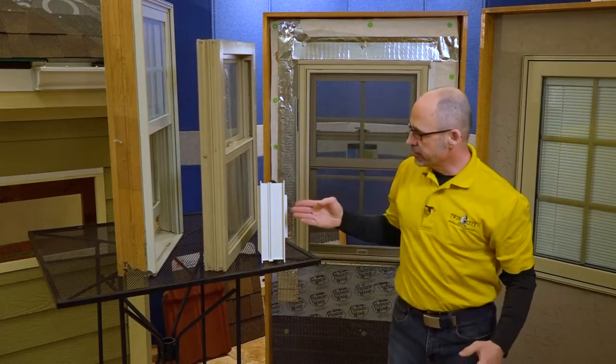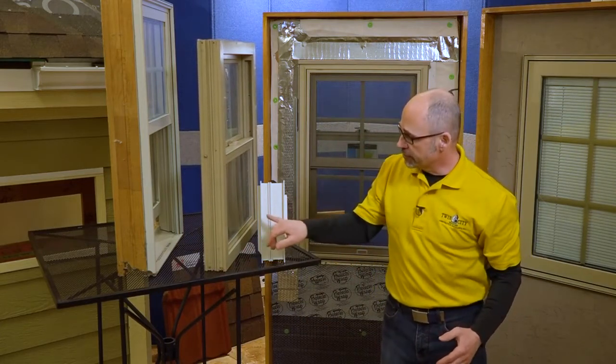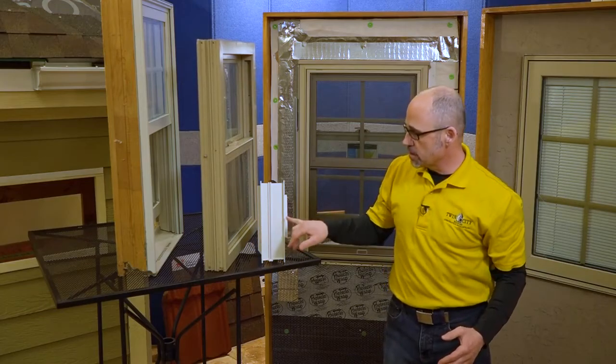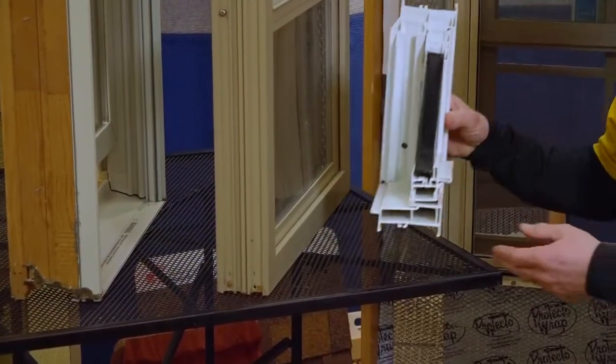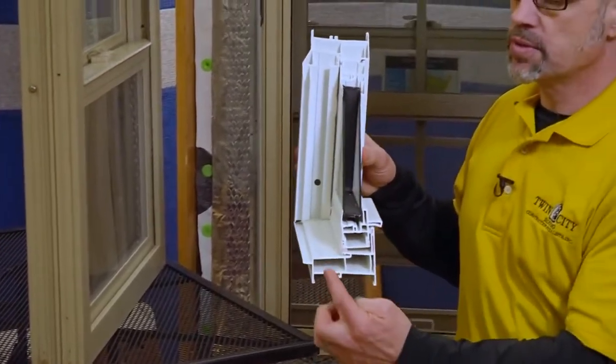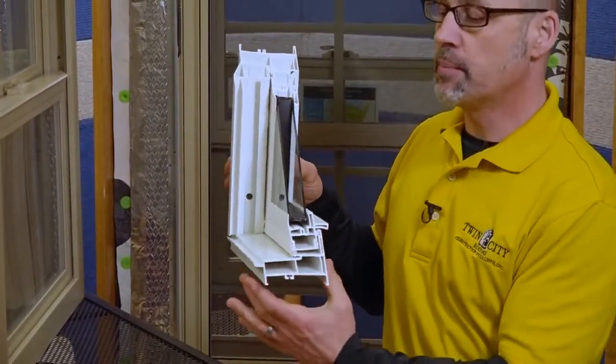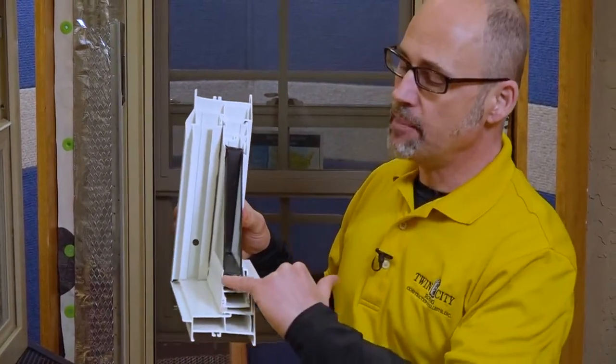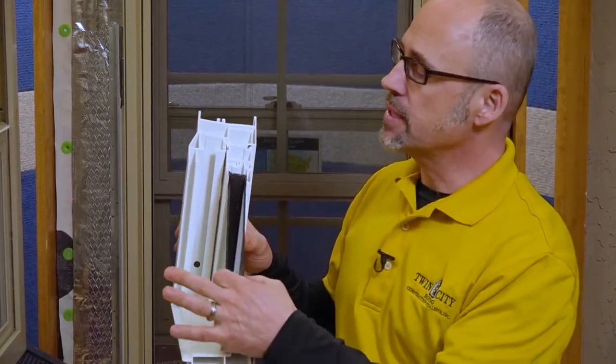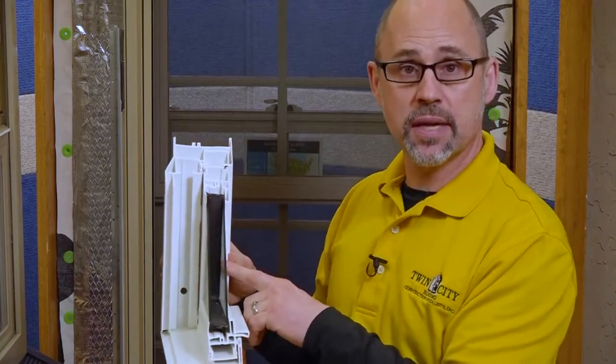And then finally with our vinyl window here on my right, the frame is this distance from this distance. We can see here with our vinyl window, we're actually seeing a cross cut which shows the individual chambers that comprise the frame of the vinyl window. Inside the topmost chamber here is the glass pack that sits inside that chamber.